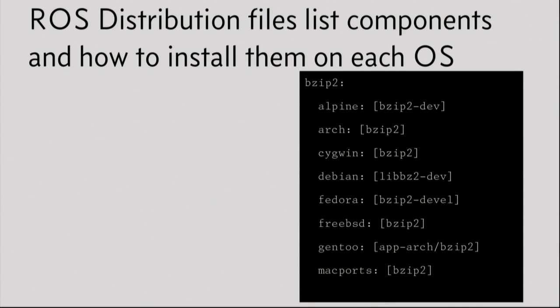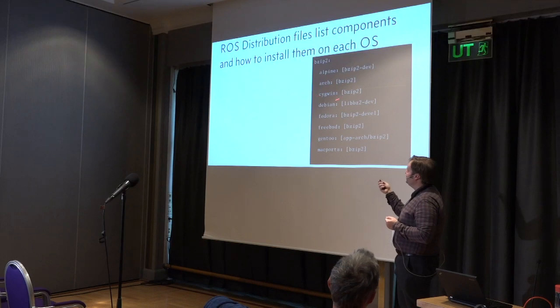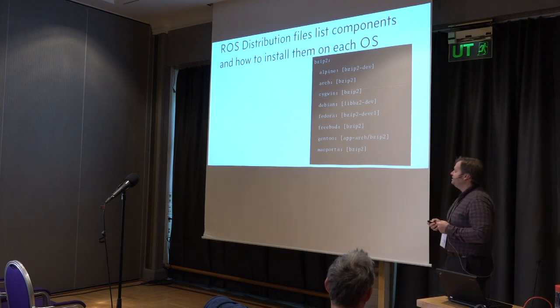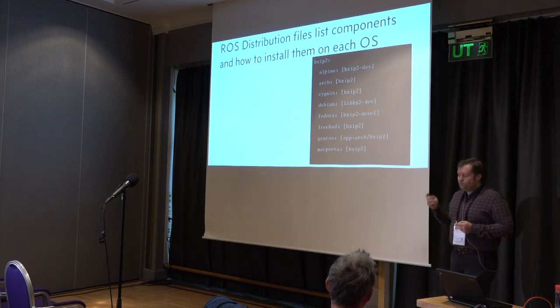ROS distribution files are basically YAML files that explain dependencies for the operating system and for ROS components, and they explain what components make up a given distribution like Melodic. Here's an example with bzip2: you can see it has entries for different systems - Cygwin, Debian, Fedora, and there's a FreeBSD entry in there too.